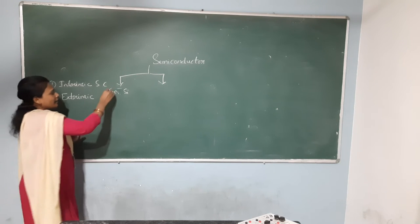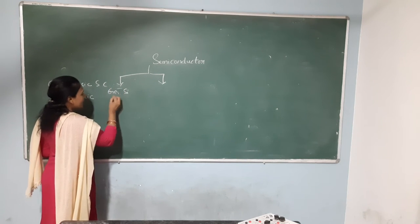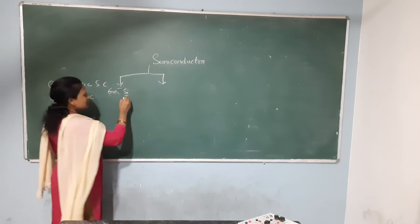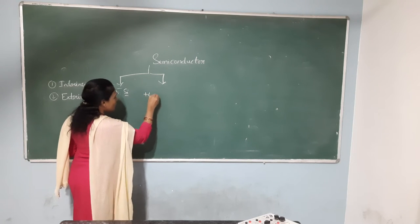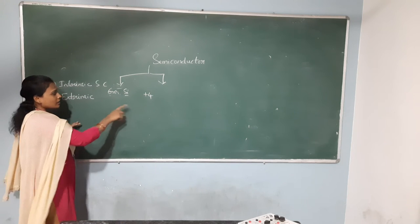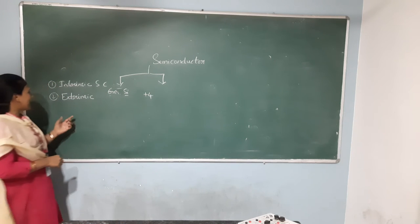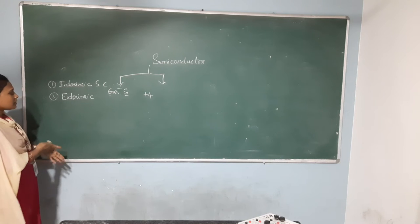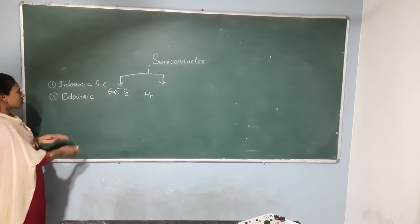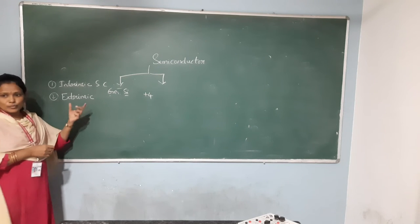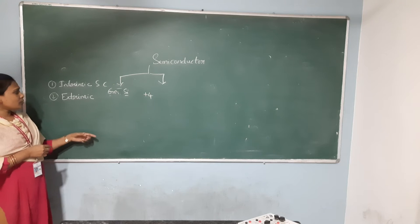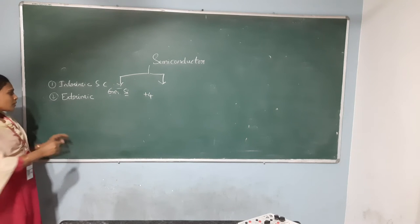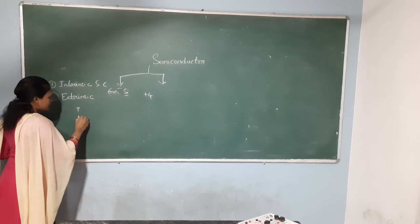In intrinsic semiconductor, taking germanium and silicon, these consist of valency electrons of 4. Extrinsic semiconductor contains impurity atoms. Based on impurity atoms, extrinsic semiconductors are again classified into two types: P-type and N-type semiconductors.